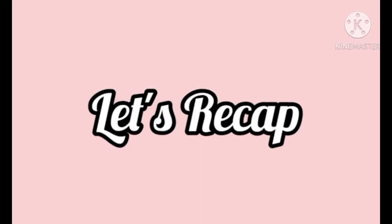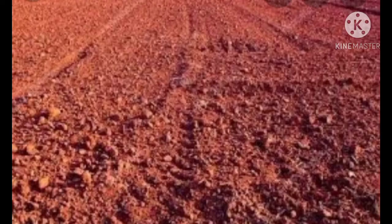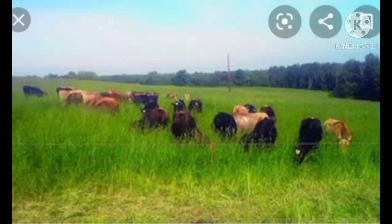Let's recap the important points. The different types of soils found in India are mountain and laterite soil, alluvial soil, desert soil, black soil, and red soil. Laterite soil is found on the hill slopes. In the northern plains, we can see alluvial soil, which is very fertile and good for farming.